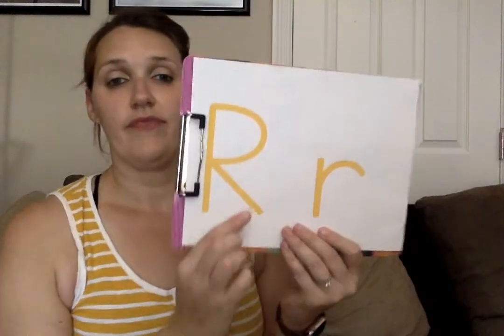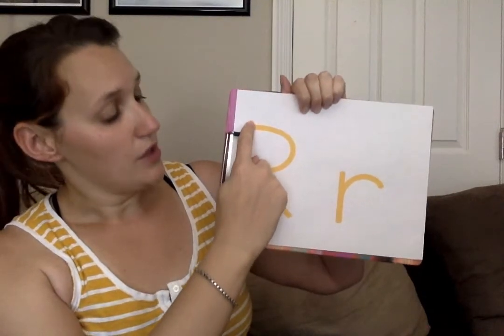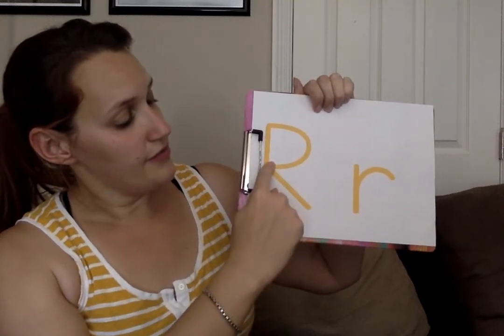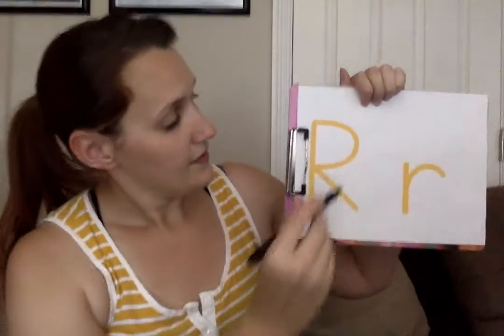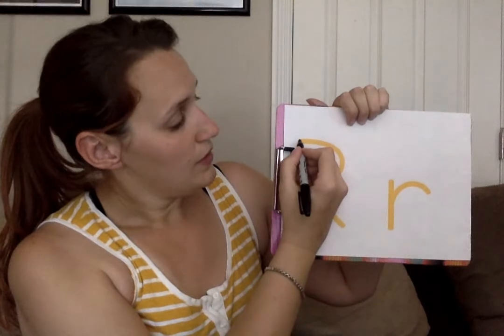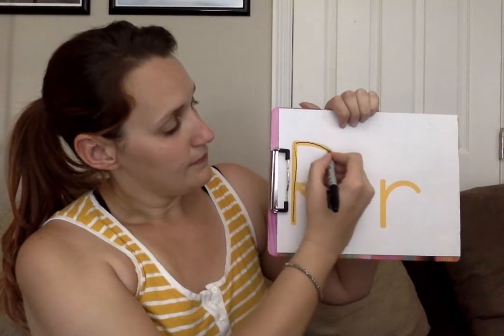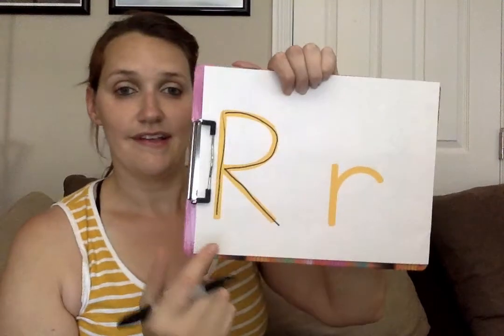So now let's work on tracing our letter R. We're going to start with our capital letter first. We're going to start at the top and we're going to go big line down, go back up, little curve, little line. Ready? Now I'm going to use my marker. I'm going to go big line down, back up, little curve, little line. That's my capital R.